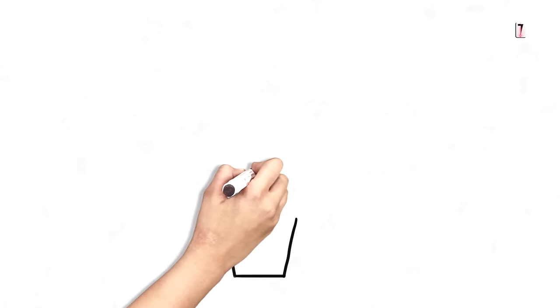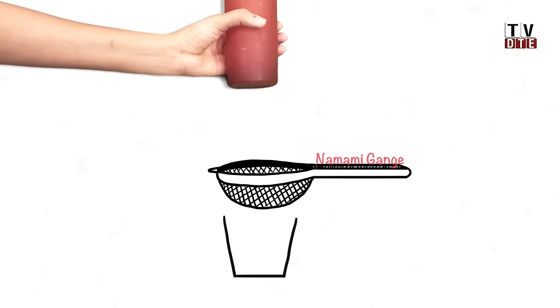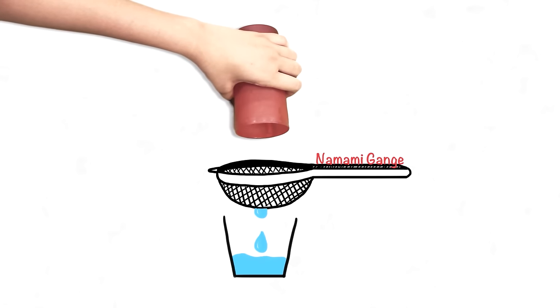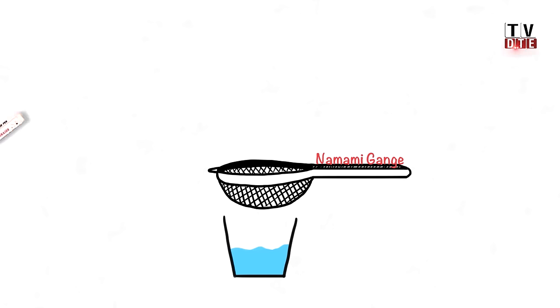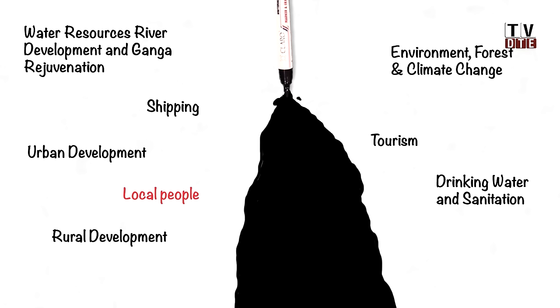At least on paper, the Namami Ganga scheme is aware of the problems faced by the earlier Ganga cleaning initiatives. The scheme can also ameliorate the water quality if implemented properly. It takes an integrated approach by involving seven ministries connected to the river, along with local people living on the banks, municipal corporations and the panchayats.